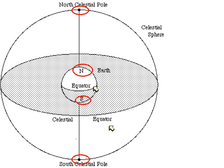We happen to have a star in the northern hemisphere that is directly — or almost directly — above the Earth's north pole. I'll draw a little star there. This happens to be the star Polaris, sometimes called the north star because it is almost directly above the Earth's north pole. So it's always in the same place all night long, always in the north, near the north celestial pole. Again, all of these are directions in space, but they make for a convenient discussion.